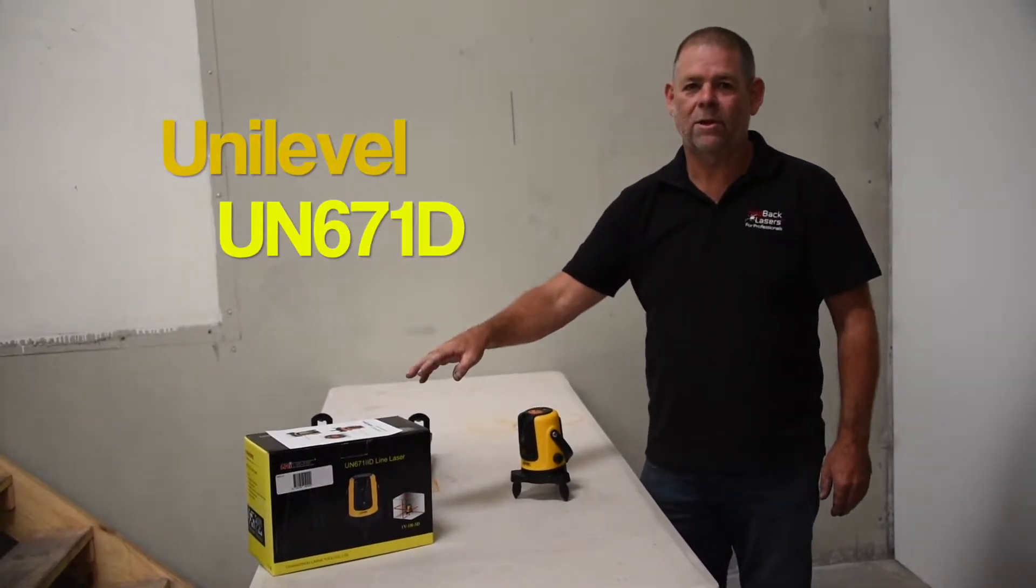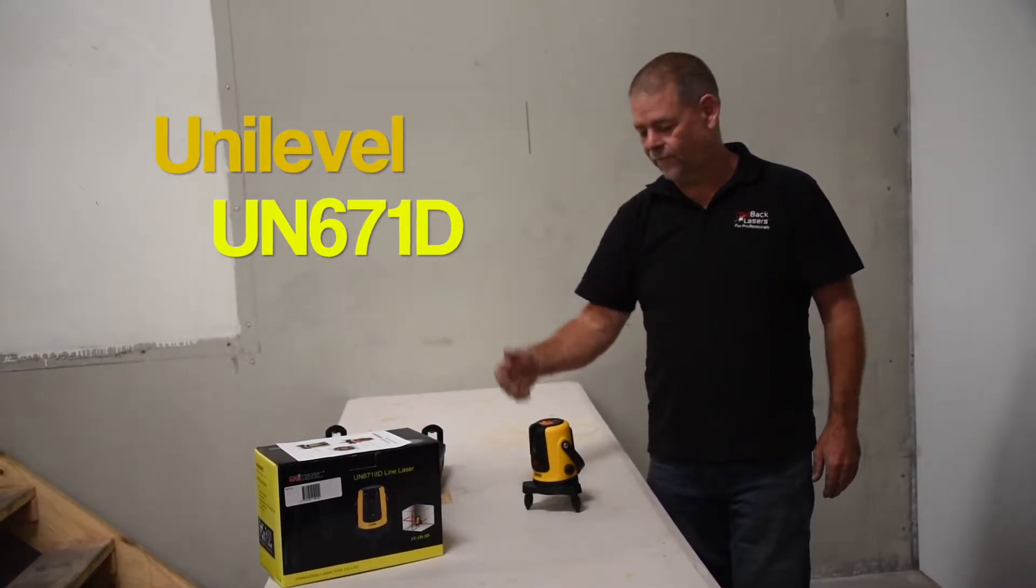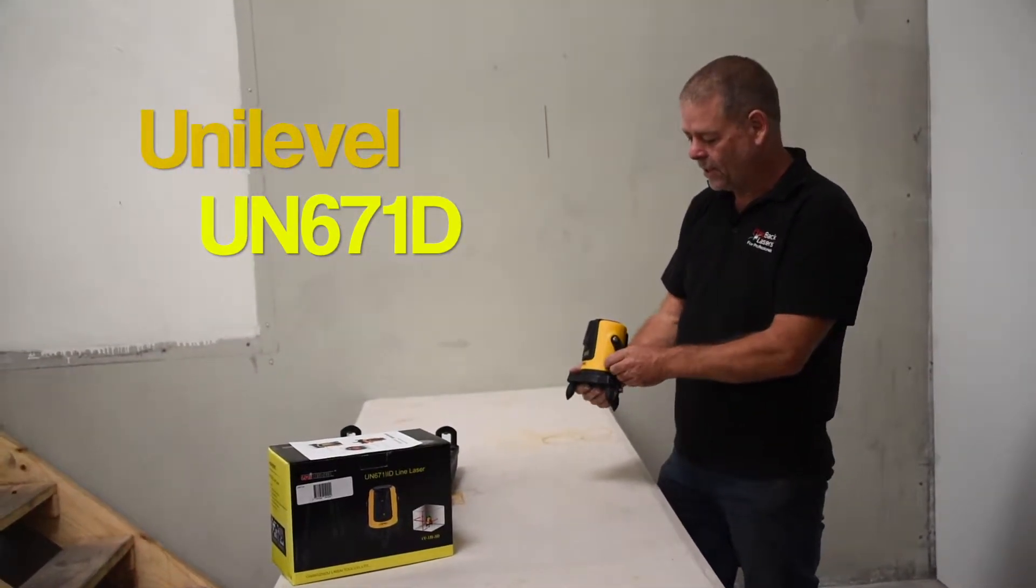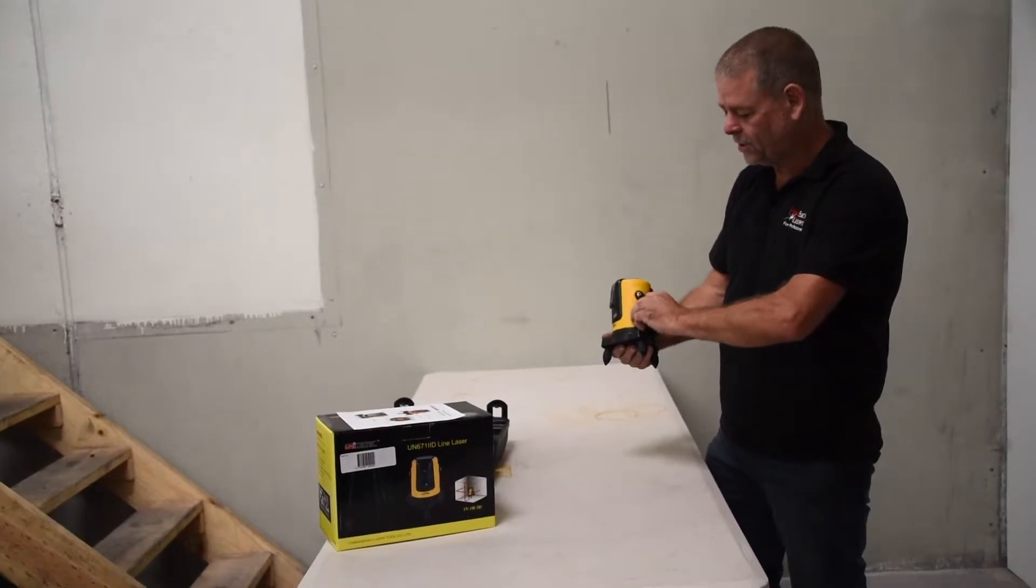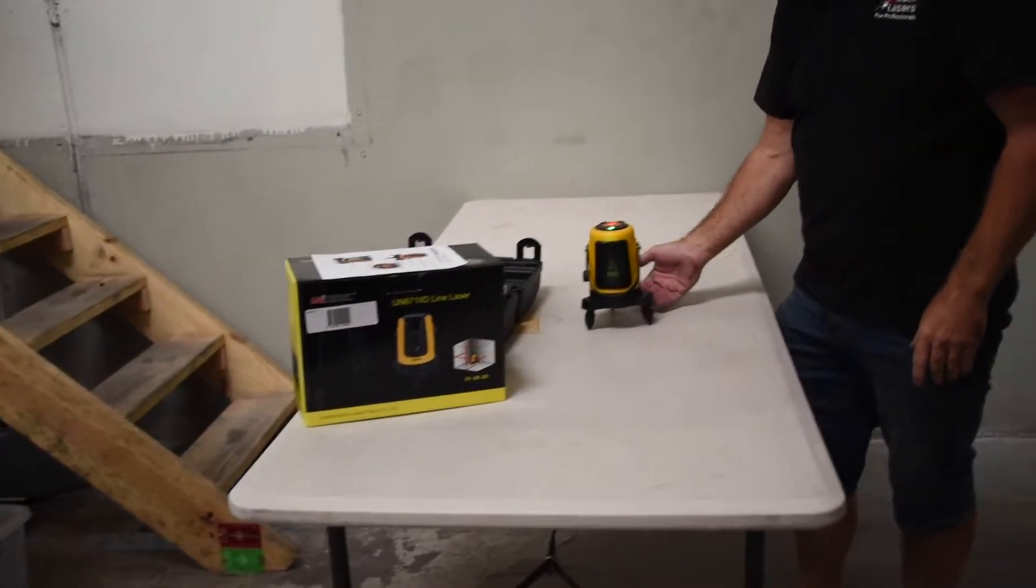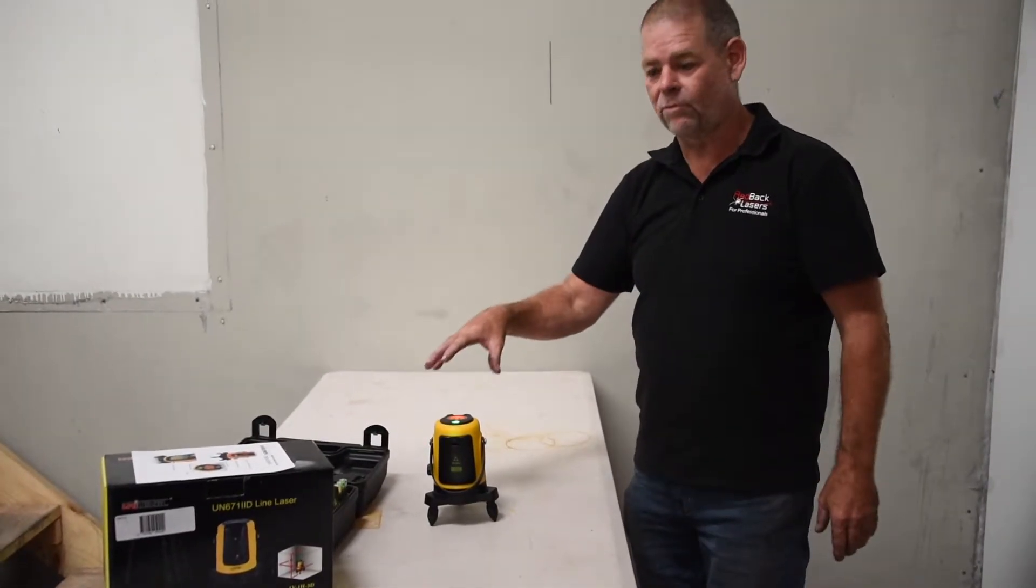So we're looking at the unilevel cross-line laser and what we're going to use it for. It's an auto-leveling cross-line laser. If we simply unlock the pendulum, the laser will flash and alarm if it's out of level. When we stick it on a level surface, it's going to auto-level.